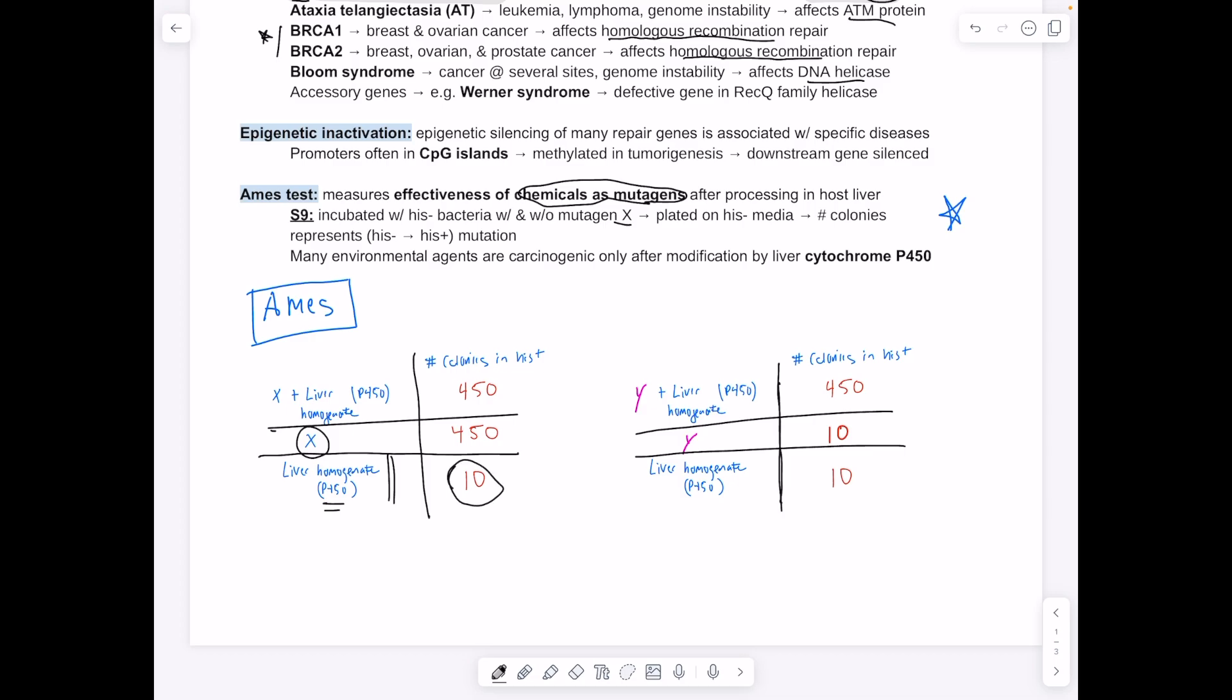The bacteria cells shouldn't survive, so the number of colonies that grow in His+ is going to be relatively low. In this scenario, if we have this chemical potential mutagen X, we have it by itself—it's formed 450 colonies. X with the liver homogenate, which includes P450, also allowed 450 colonies to form. So basically, our takeaway from this is that X is mutagenic and doesn't need to be activated by P450.